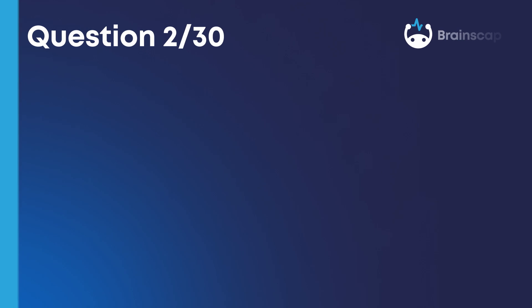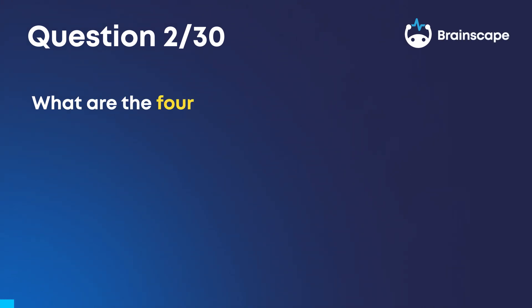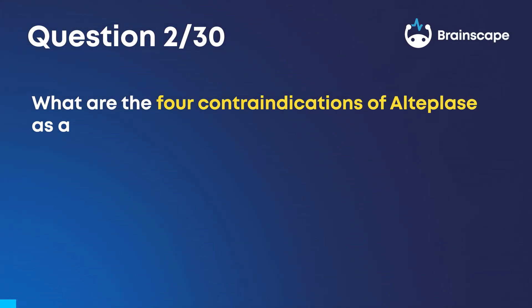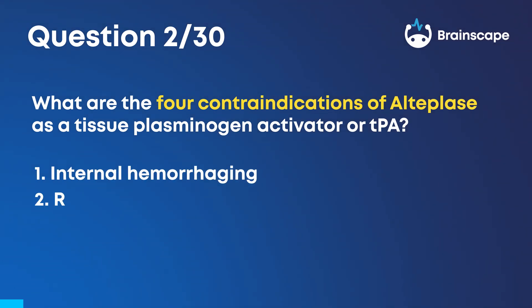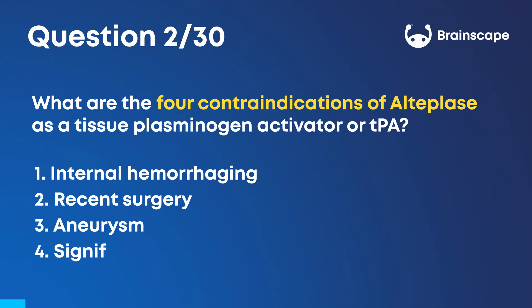Question 2. What are the four contraindications of Alteplase as a tissue plasminogen activator or TPA? Internal hemorrhaging, recent surgery, aneurysm, and significant hypertension.